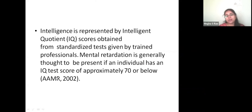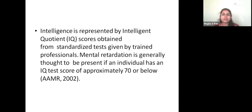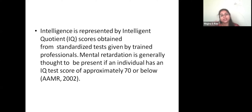Intelligence is represented by the Intelligent Quotient, or IQ. Just like we use temperature to measure fever or glucose levels to measure diabetes, intelligence scores work similarly — we have an average in the middle, and anything above that is genius or highly intellectual. Below that, we call it mental retardation. The IQ score is obtained through standardized intelligence and adaptive tests administered by trained professionals.